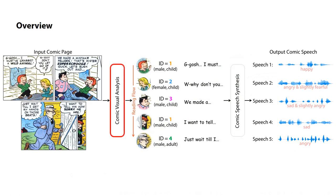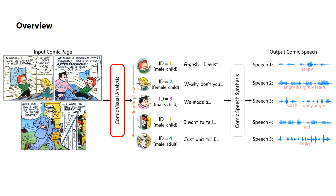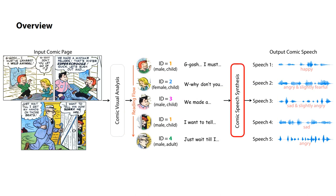In the comic visual analysis phase, our approach rearranges the comic elements — such as panels, speech balloons, texts, and characters — according to the reading flow, and associates the speech balloons with the comic characters. It also recognizes the identities and personal attributes of the characters, as well as inferring their emotion states in speaking each piece of text.